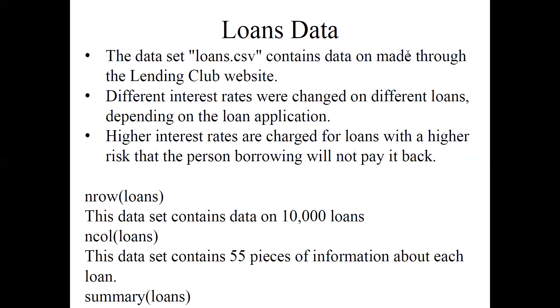If we load this into R, nrow(loans) tells us that there are 10,000 different loans in this data set. ncol(loans) tells us that this data set contains 55 columns, 55 pieces of information about each loan.